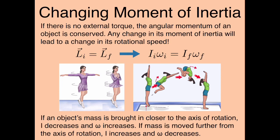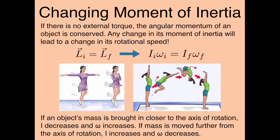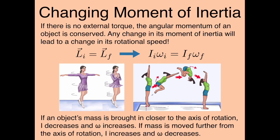This is something athletes do all the time, particularly in gymnastics, diving, or figure skating. A figure skater with her arms far out increases her moment of inertia; bringing her arms in decreases it, making her spin faster. A gymnast performing a flip tucks in to decrease I and spin faster, then spreads arms and legs out to slow down and land safely.